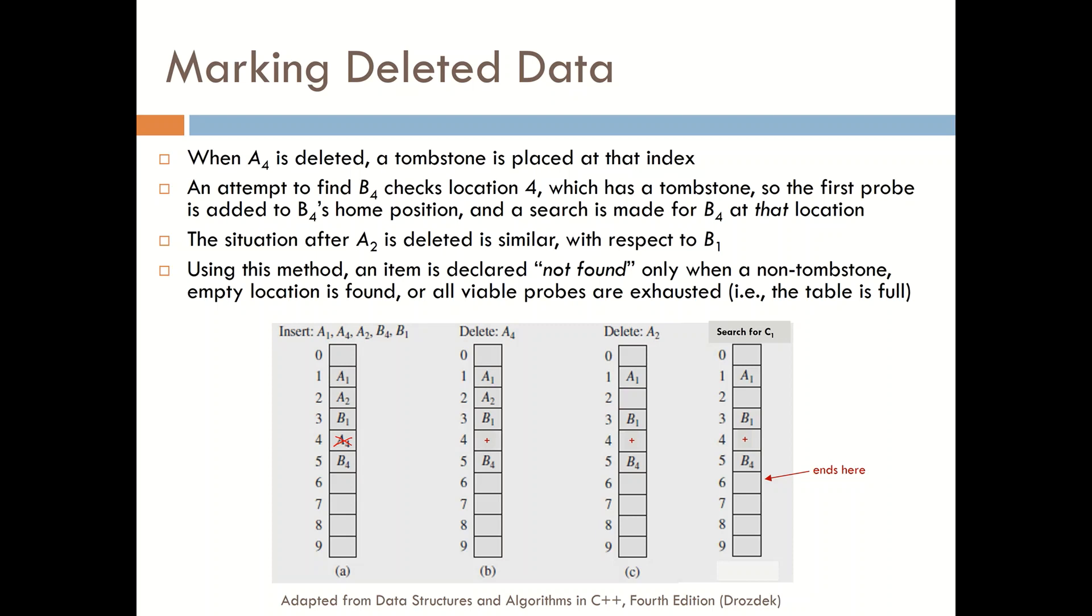Now an attempt to find B4, we'll hash into location four and we'll actually find a tombstone there. And this is an indication that the search should continue until we either find an empty location or we explore all available probes. So in the case of searching for B4, we would hash into this particular location but we find that there's a tombstone there. So we add the next probe and we look for B4 in the next slot and we find it.